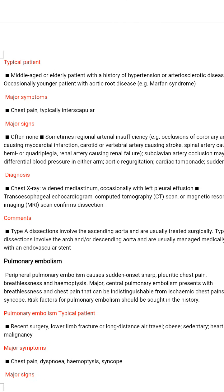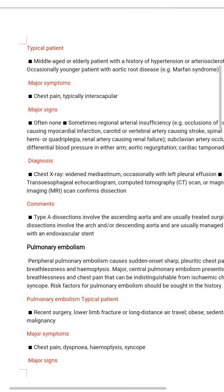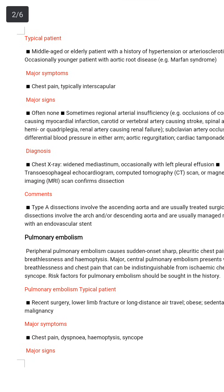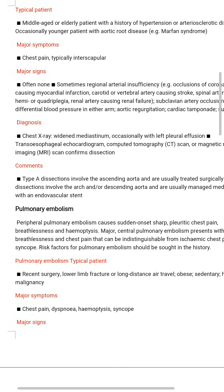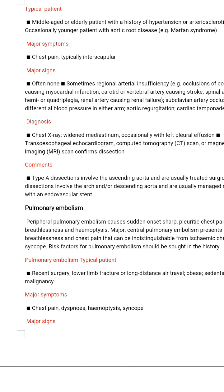Diagnosis of aortic dissection: chest X-ray showing widened mediastinum, occasionally with left pleural effusion; transesophageal echocardiogram; computed tomography scan; and magnetic resonance imaging. MRI scan confirms the dissection.